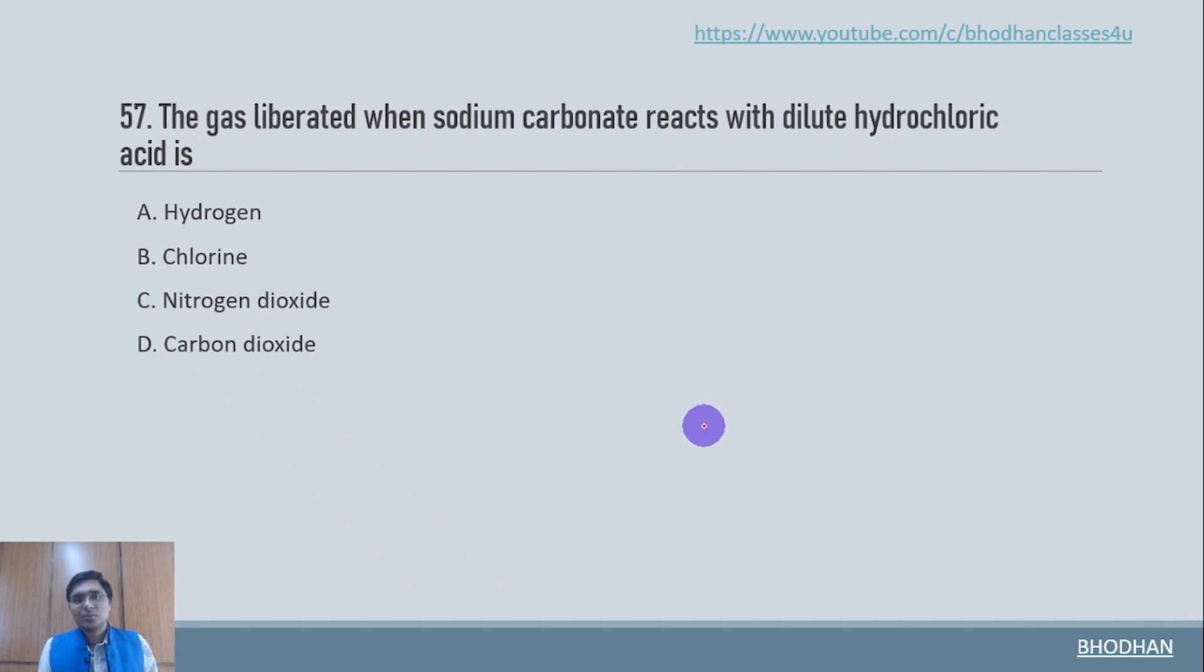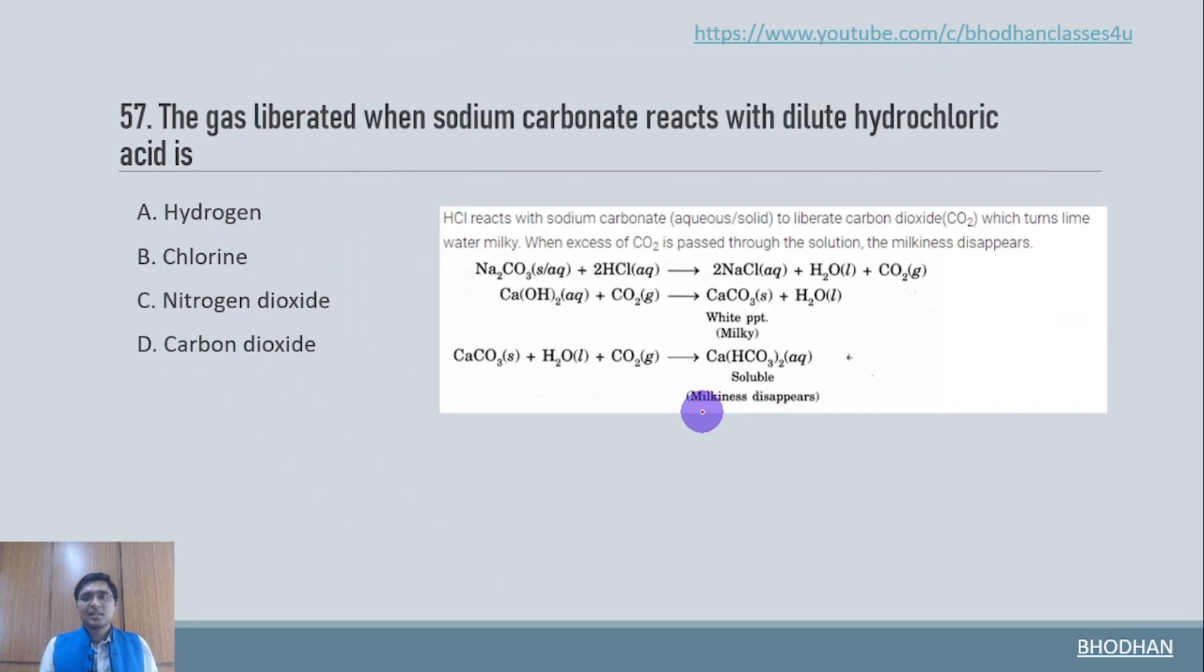The gas liberated when sodium carbonate reacts with dilute hydrochloric acid. Now the chemical reaction involved here is sodium carbonate is treated with HCl. Then NaCl is formed along with that carbon dioxide gas is liberated. Now when this carbon dioxide gas is passed through calcium hydroxide, we will get a compound that is calcium carbonate, which is milky white precipitate. Now if we further react this calcium carbonate with CO2, which is nothing but excess of carbon dioxide, then we will get calcium bicarbonate which is basically soluble and milkiness disappears. So we have got carbon dioxide as the correct answer.